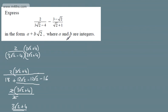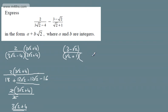Now let's deal with the fraction on the right. We've got 3 minus root 2 in the numerator, and root 2 plus 1 in the denominator. To rationalise this, I need to multiply the numerator and denominator by root 2 minus 1.